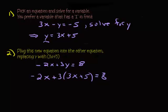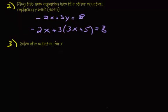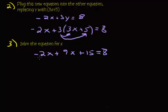Moving on to step three. Solve the equation for x. Notice we have an equation with one variable. We're going to solve for x. First, we have to distribute this 3 into the parentheses. We get negative 2x plus, and now 3 times 3x is 9x, 3 times 5 is 15. That's going to equal 8. Notice we have like terms. Negative 2x plus 9x is 7x plus 15 equals 8.